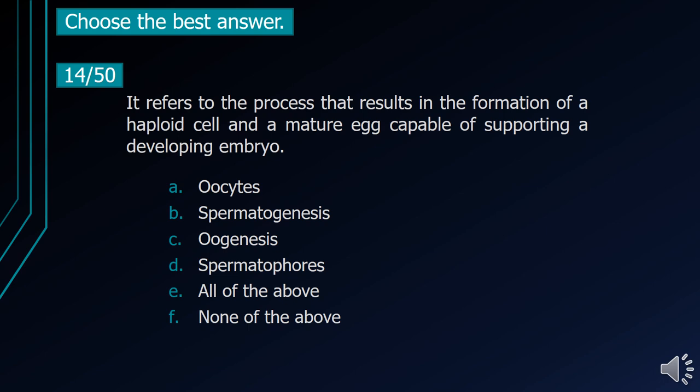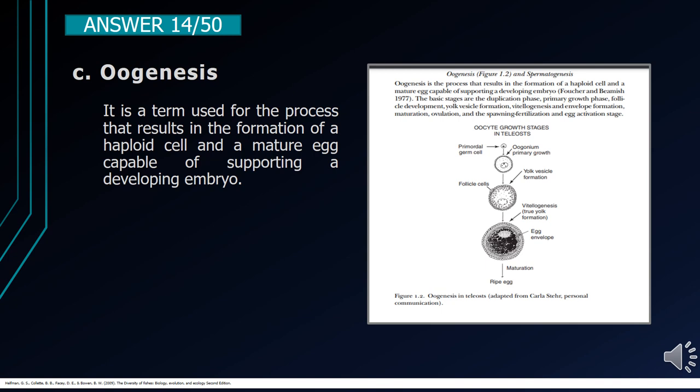Number 14. It refers to the process that results in the formation of a haploid cell in a mature egg capable of supporting a developing embryo. A. Oocytes. B. Spermatogenesis. C. Oogenesis. D. Spermatophores. E. All of the above. F. None of the above. The correct answer is letter C, Oogenesis. It is a term used for the process that results in the formation of a haploid cell in a mature egg capable of supporting a developing embryo.